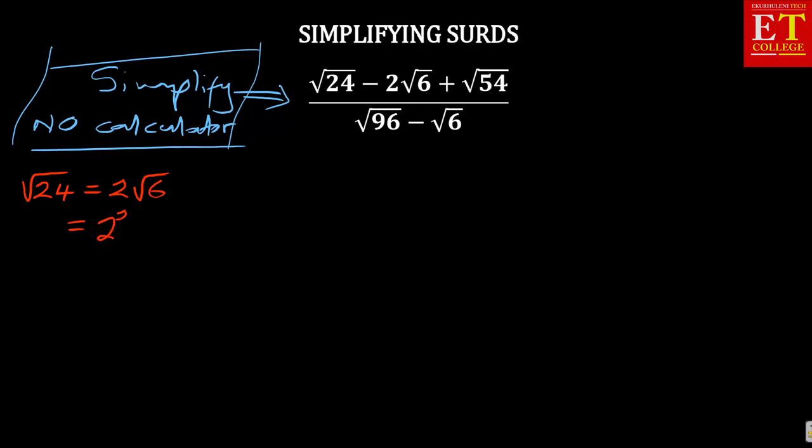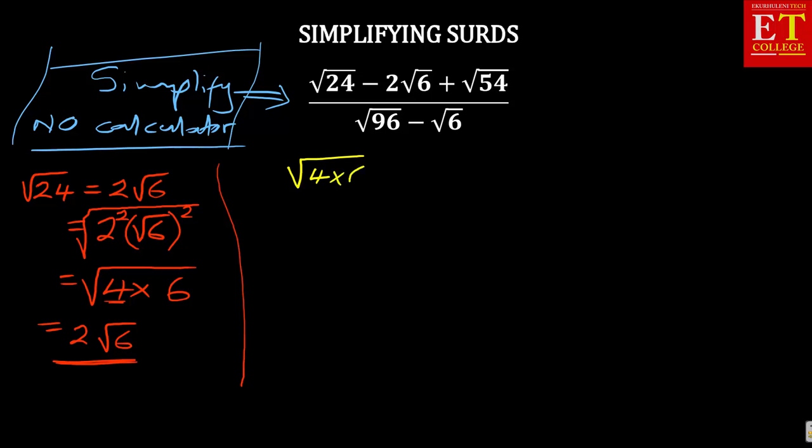It means this is same as 2 squared. If I say 2 squared as well as square root of 6 squared, and I put a square root like this, I'm going to be having a square root of 4 times 6. So in actual fact, that is where the 2 root 6 is coming from, because the square root of 4 is a 2, remaining with the square root of 6. In which case, 24 is 4 times 6, so you're going to have square root of 4 times 6.